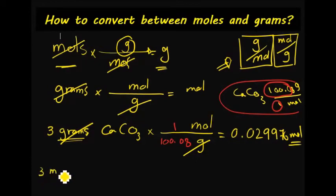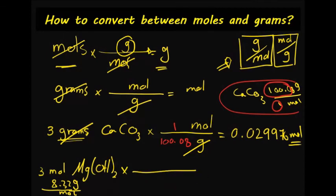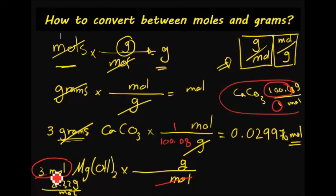Another example: if I'm given 3 moles of magnesium hydroxide and I want to convert it to grams, the molar mass of magnesium hydroxide is 58.32 grams over one mole. Should I put moles on the top or moles on the bottom? Since moles is on the top here, I have to put moles on the bottom so it cancels out, giving me grams on top.